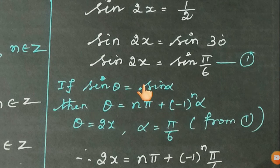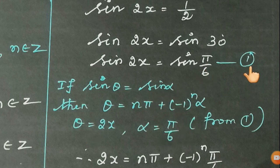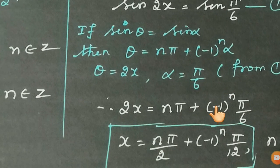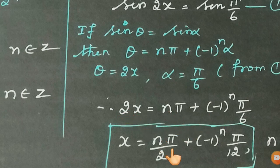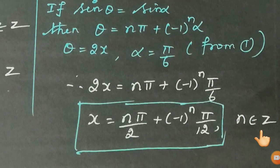Applying the formula with θ = 2x and α = π/6: 2x = nπ + (-1)^n · (π/6). Dividing both sides by 2, the general solution is x = nπ/2 + (-1)^n · (π/12), where n belongs to Z. Thank you.